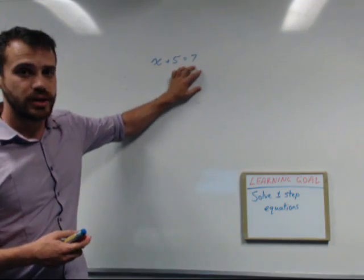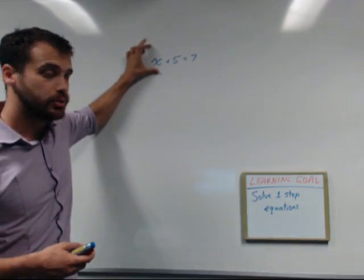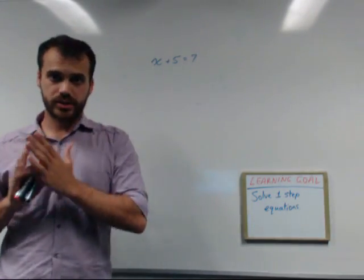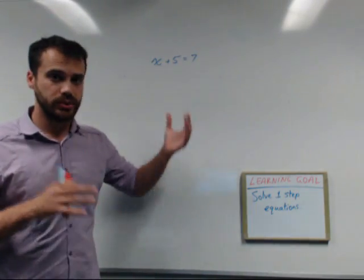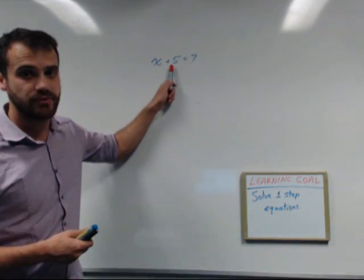So x plus 5 equals 7. Now the goal here is to figure out what x is. In order to figure out what x is, you need to isolate it. That is, get it on one side by itself. So when you're trying to do that, ask yourself the question, what's there with it? What's stopping x from being by itself? Now in this case it's the positive 5.